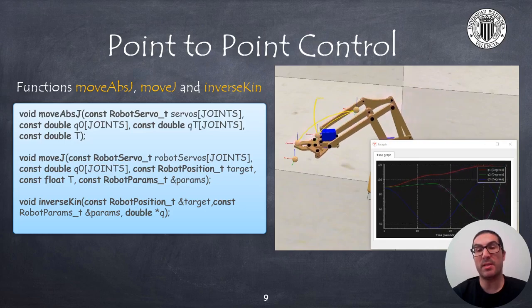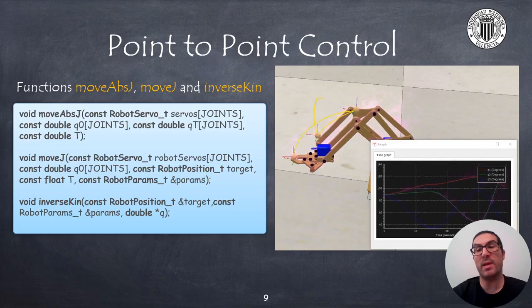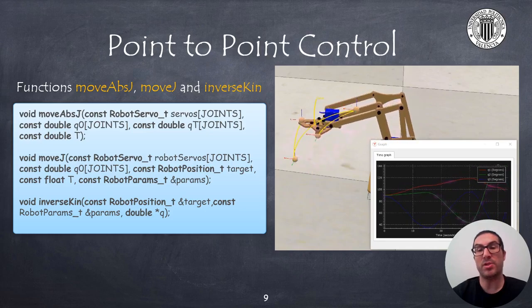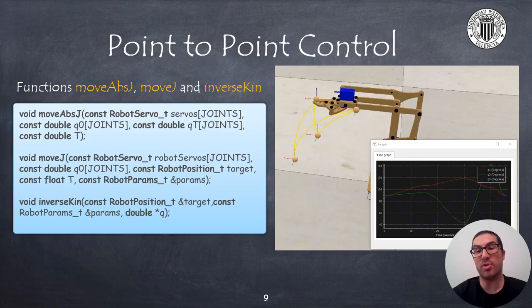Please implement the movej instruction resembling the RAPID instruction under the same name. This instruction must include as input arguments the target position, but also as additional input arguments the servo variables to know exactly how to move each of the servos, and also the current robot configuration with the vector q0. The movej function will indeed call the inverse kinematic function that can be implemented as a separated function.